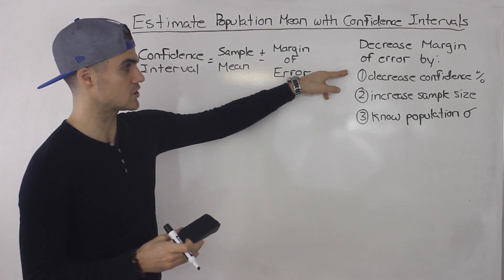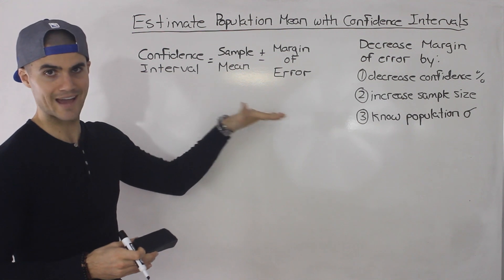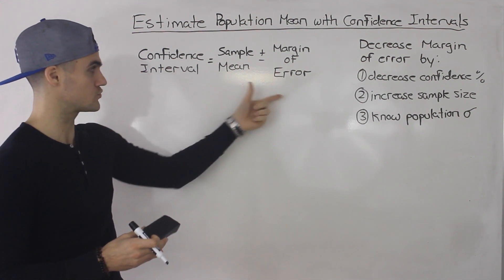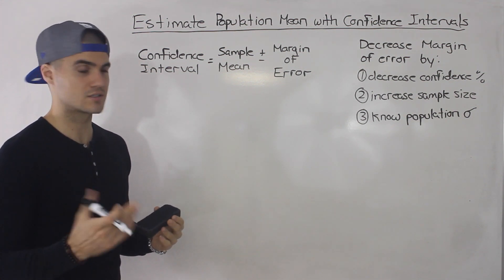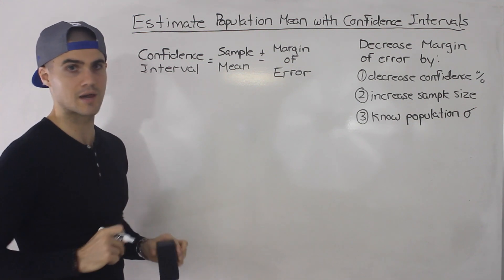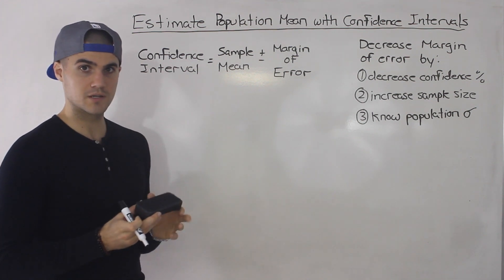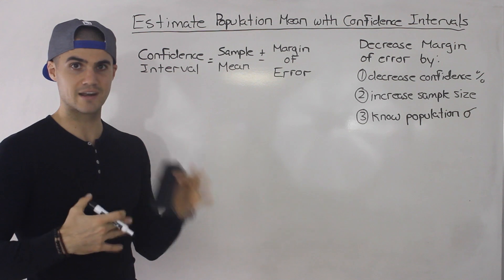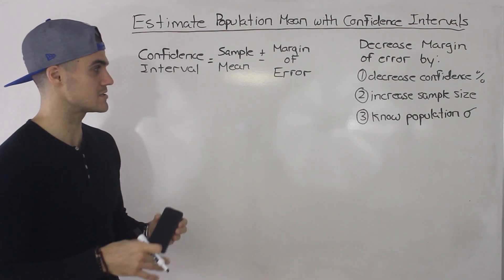The first strategy is to decrease the confidence percentage — so instead of a 90% confidence interval, you could have a 60% confidence interval, which would decrease the margin of error. But that's not the best strategy; we don't want to decrease our confidence in estimating the population mean. Second, we can increase the sample size, because the larger the sample you take from a population, the more representative it will be of the overall population, giving you a better estimate.